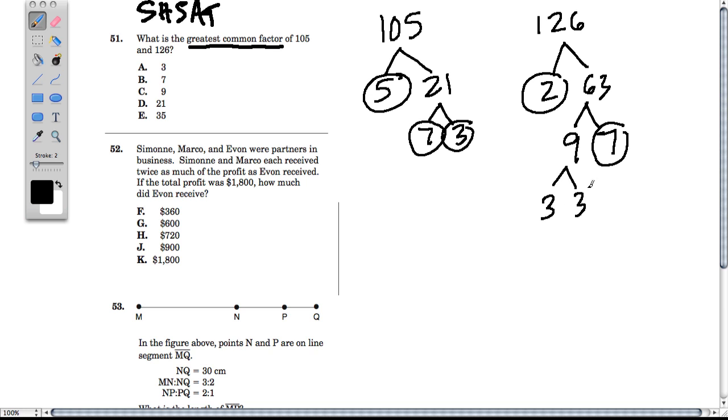And now we have all our primes. To find the greatest common factor, just match up the prime factors. So here I have one 3, here I have one 3. Here I have one 7, there I have one 7. So that means that 21 goes into each number. 7 times 3 and 7 times 3. And look at that. There's our greatest common factor.